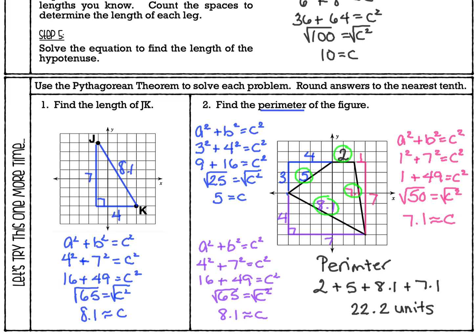As you can see, finding the distance between two points is very easy once you know how to use the Pythagorean Theorem. Just draw a line, make a right triangle, find the hypotenuse. If you have a perimeter problem you're doing the same thing — you just have to do it more than one time and then add all of those side lengths together. I hope this was helpful. If you have any questions please ask me in class tomorrow or ask your math teacher — we're always happy to help.